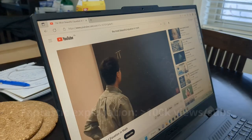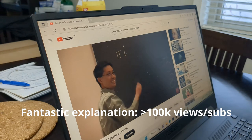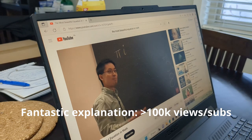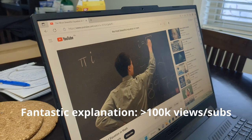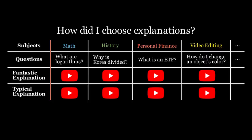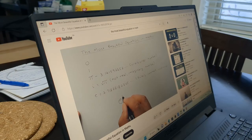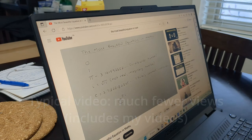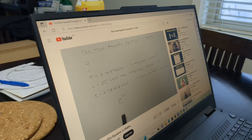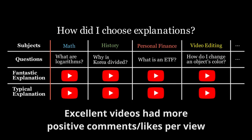I then found two videos that answered each question. One was an excellent video, defined as a video with at least 100,000 views or a video from a channel with at least 100,000 subscribers. The other video, which I'll call a typical video, had much fewer views than the excellent video. Obviously, a video's number of views isn't a perfect measure of its quality, but I found that the excellent videos had far more positive comments and likes per view than typical videos.